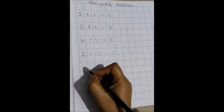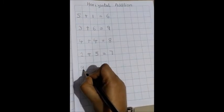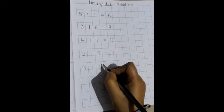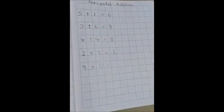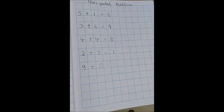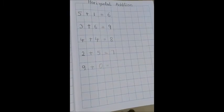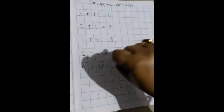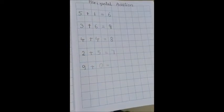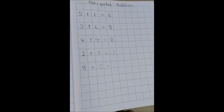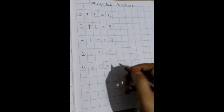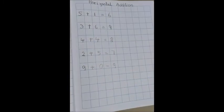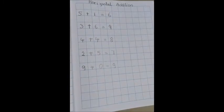One more sum let us do. 9 plus 0 equals to. So which is the bigger number, 9 or 0? 9 is the bigger number. So we have 9 in our minds and 0 fingers out. That means no fingers out. So how much it will be? Yes, 9.